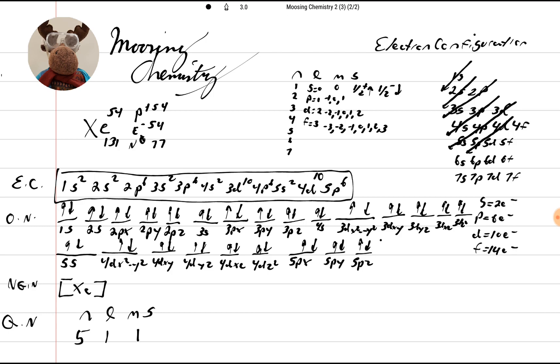And notice that the last arrow here is down. So it's going to be 1 half negative. And that's it for this lesson. You guys be snarly, and we'll see you back here at Moosin Chemistry.